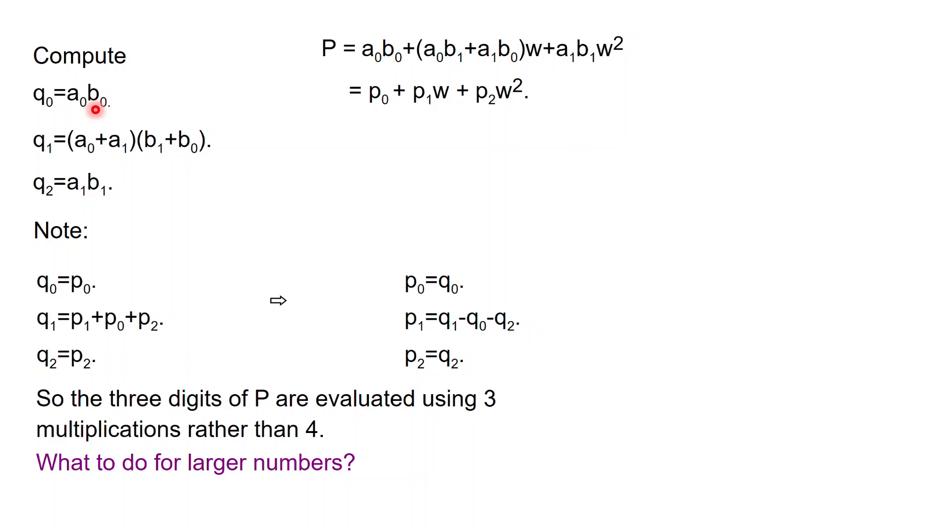Recall that we are trying to compute this. We want to compute P, we want to compute the numbers P0, P1, and P2. We are not going to perform these multiplications directly. Instead we are going to compute Q0, which is A0 B0. This is exactly P0, the first multiplication in the natural order. Then we are going to compute Q1, which is a strange number. Q1 does not correspond to anything which we want, but it will be useful later. Q1 is A0 plus A1, quantity, times B1 plus B0.